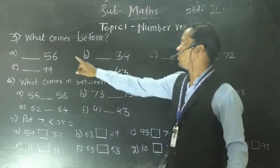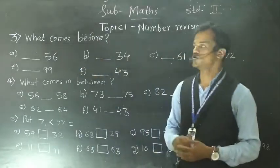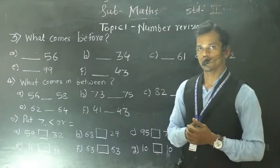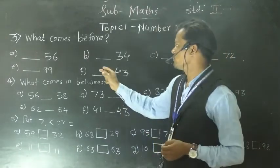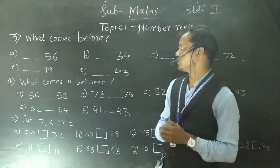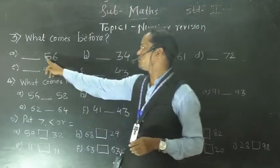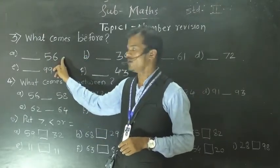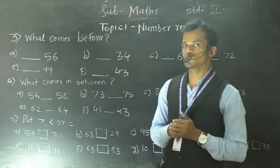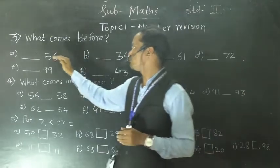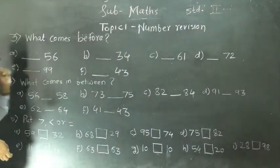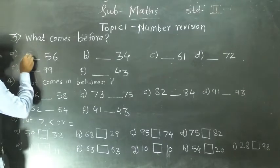Third question: what comes before? So we have to write the before number — the consecutive number. So here 56 is given and we have to find the before number of 56. So before 56, 55 comes in the number series. So here write 55.